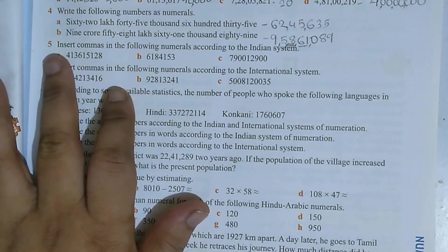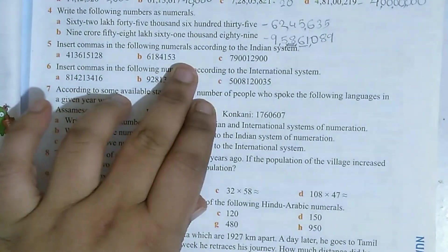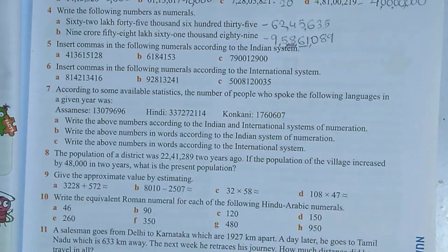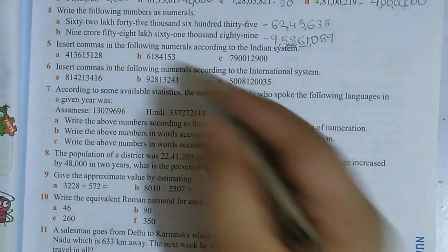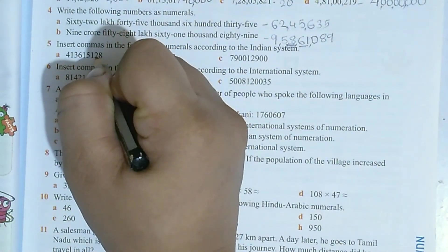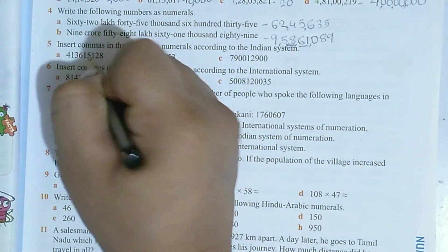Question number 5: Insert commas in the following numerals according to the Indian system. It's very easy in the Indian number system. I have taught you: ones, tens, hundreds, it will come here.